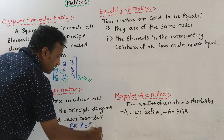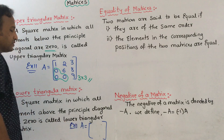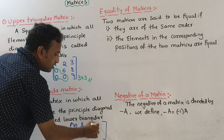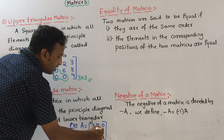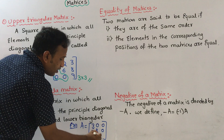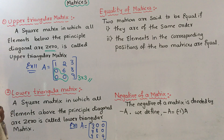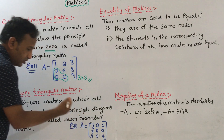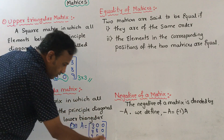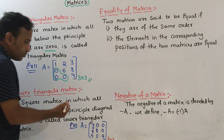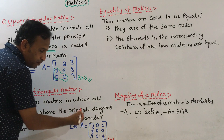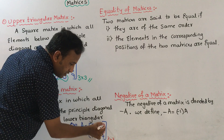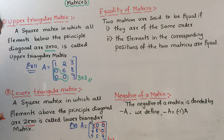Example of a lower triangular matrix A equals: 3, 0, 0 / 7, 8, 0 / 9, 5, 4. This is a 3×3 square matrix where all elements above the principal diagonal are zero, confirming it is a lower triangular matrix.